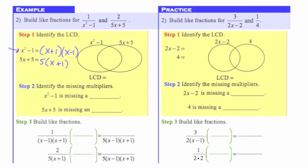Notice they share a common factor of (x plus 1), so that common factor of (x plus 1) is going to go in the middle. Now with x squared minus 1, we also have this other factor of (x minus 1). And with 5x plus 5, we also have this other factor of 5. I've got all of my factors now into the Venn diagram.